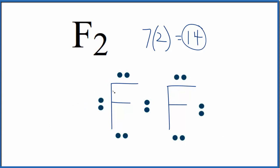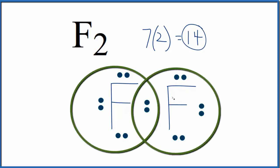Next we'll complete the octets on each of the fluorine atoms until we've used 14 valence electrons. At this point, we've used 14 valence electrons, and each of the fluorine atoms has an octet, eight valence electrons. So this is the Lewis structure for F2.